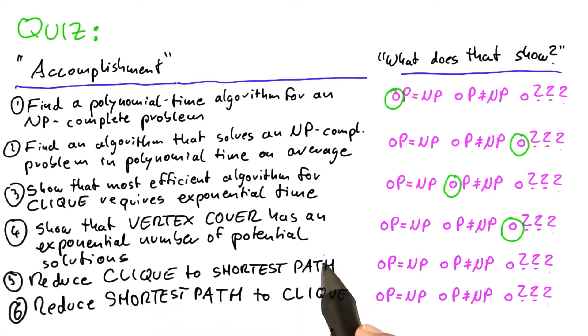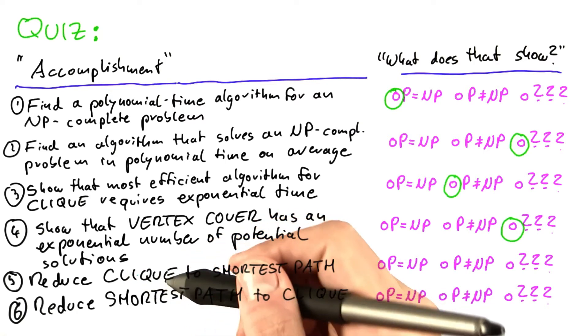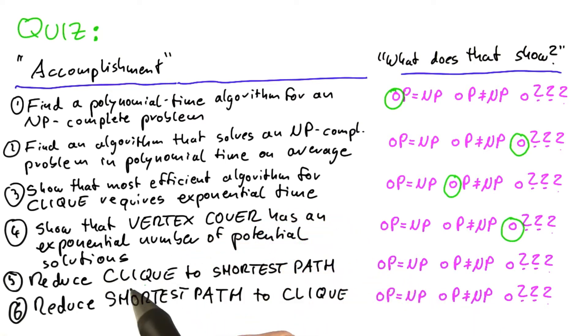Now, reducing clique to shortest path versus reducing shortest path to clique, then you have to remember again what reduction means. So if you reduce clique to shortest path, it means that solving the shortest path problem is also capable of solving the clique problem.